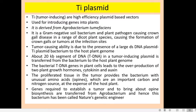The part of the Ti plasmid of Agrobacterium tumefaciens which is transferred to the host cell genome is called T-DNA, which is about 20 kilobases long. When T-DNA is incorporated into the host cell genome, the plant genome is manipulated by this bacterium. So what change does it cause to the plant cell?